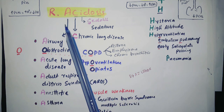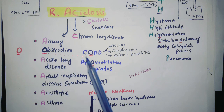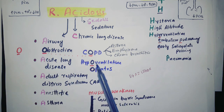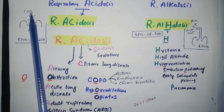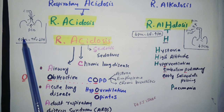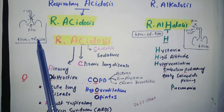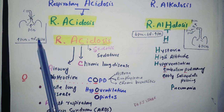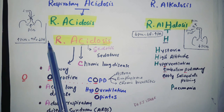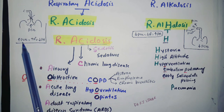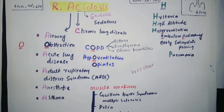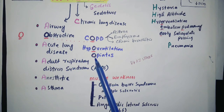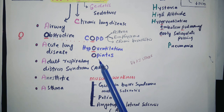O also stands for hypoventilation — when we are not expelling carbon dioxide from the body, CO2 increases inside, protons increase, and pH decreases. Since CO2 and pH go in opposite directions, the problem is respiratory. O can also stand for opiates.